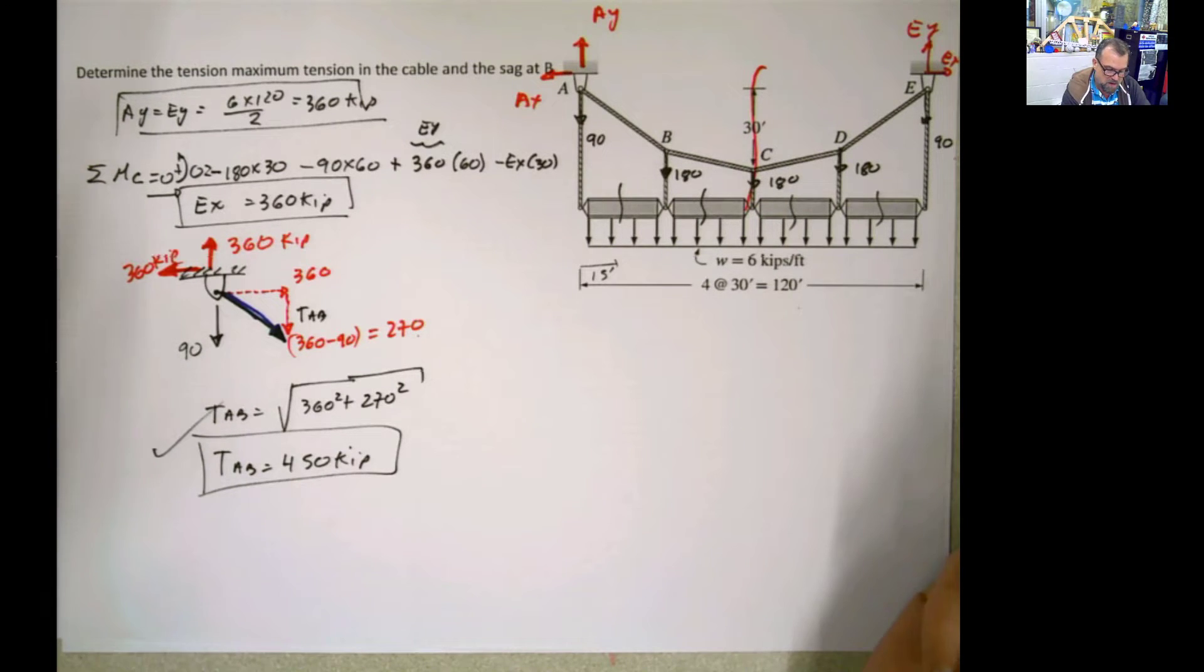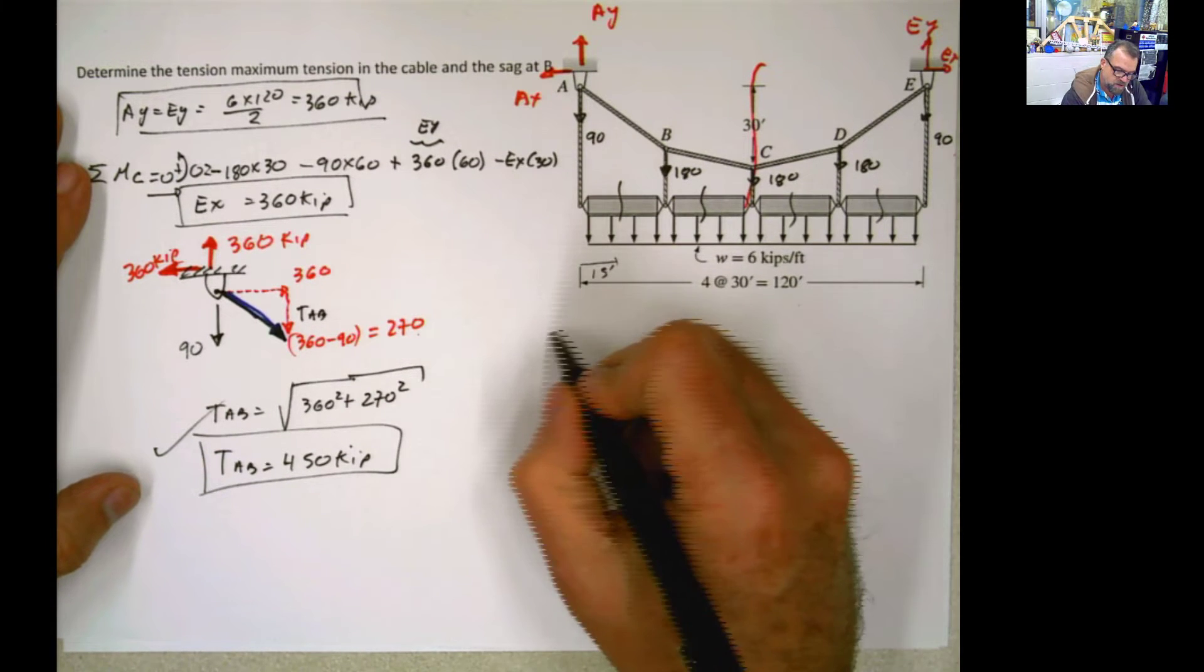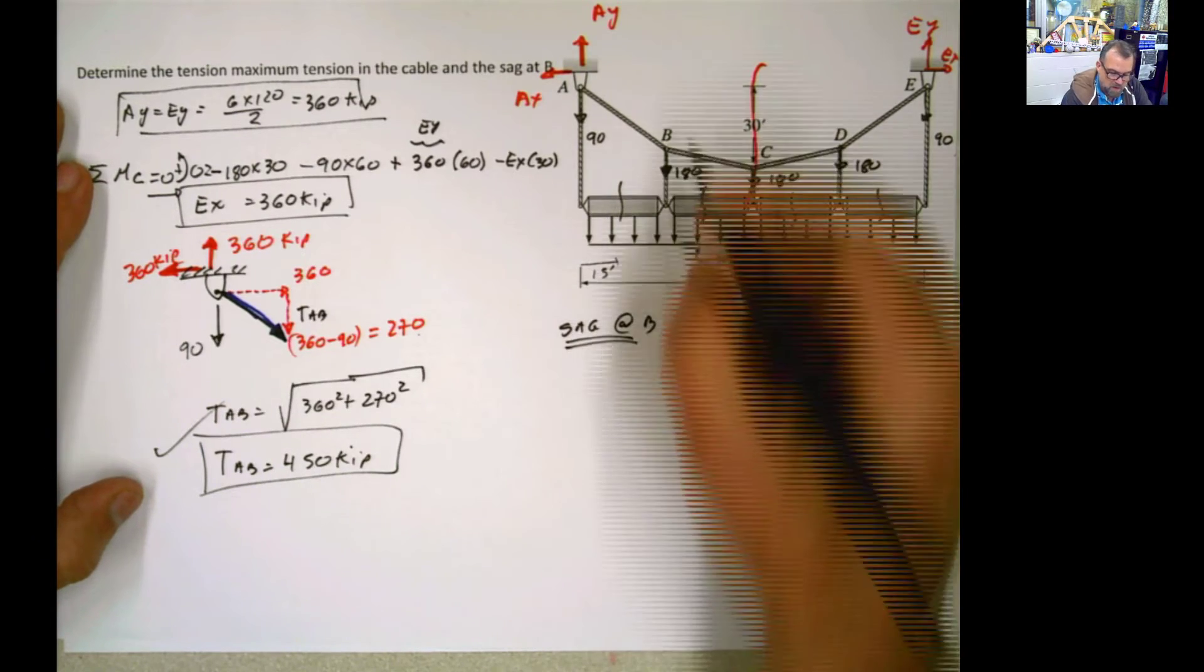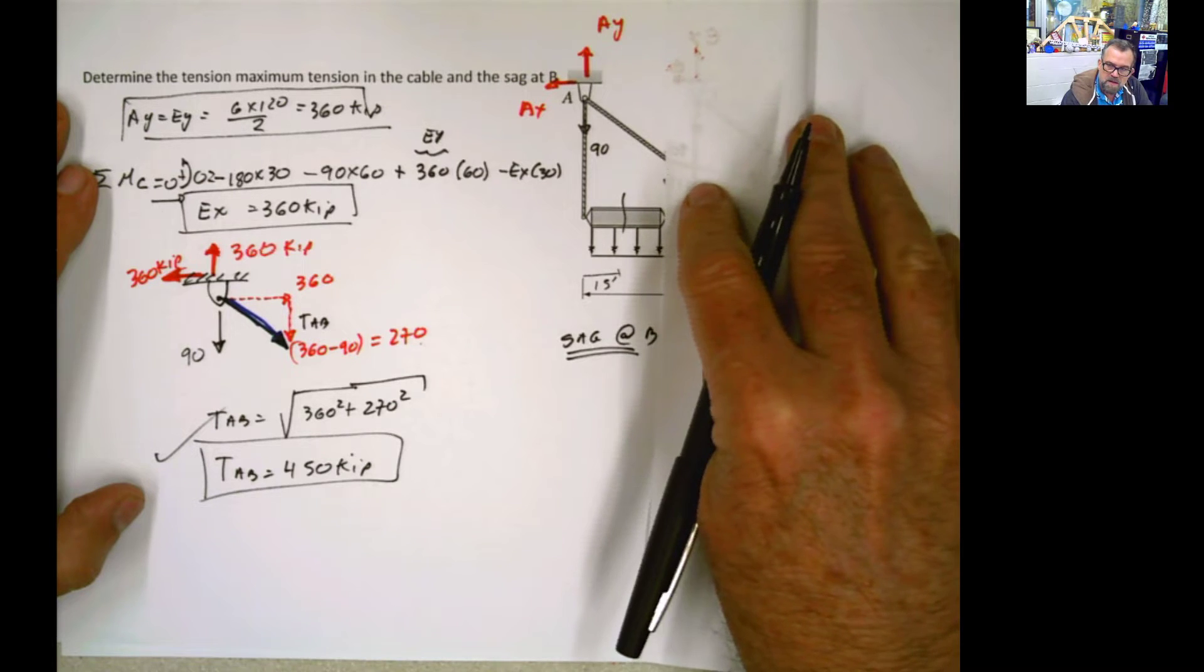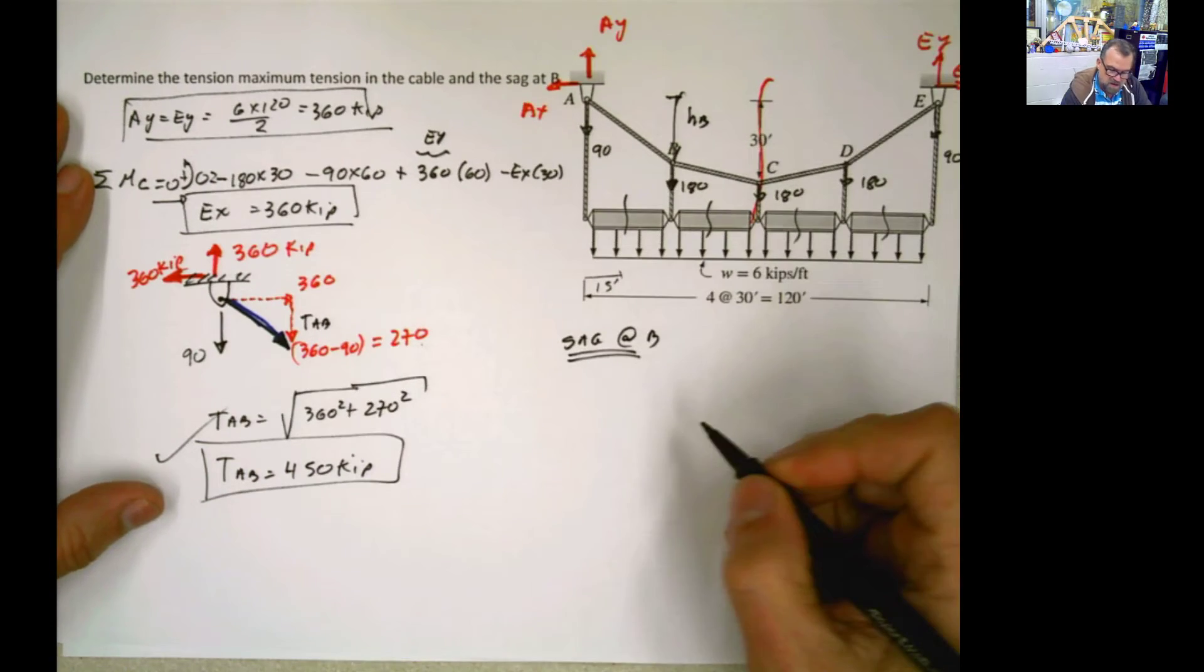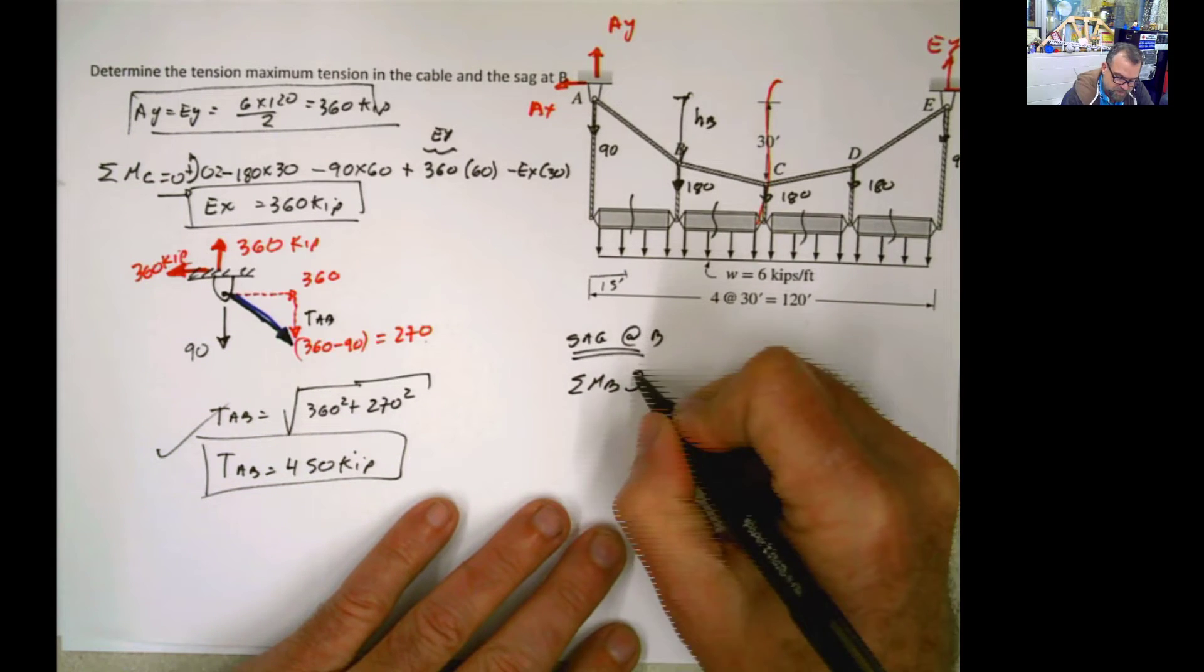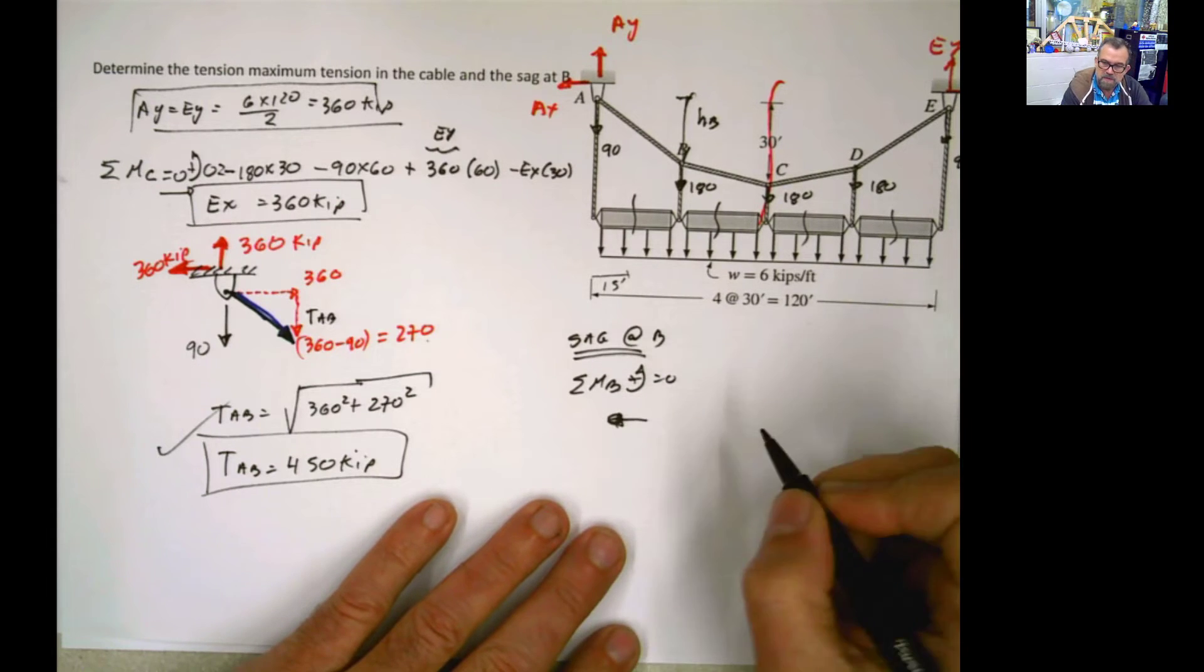Because of that little big detail that we have over there. Now, the other part of the problem is much of the same. Calculate the sag at B. So if I have to calculate the sag at B, part 2, sag at B, we just make a cut here at this point. And I study the left side, because it's easier. So this distance is going to be the sag at B. And the only thing that we have to do is summation of moments at B.